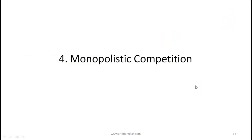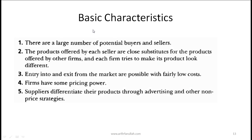Now let's talk about monopolistic competition. The basic characteristics — you need to memorize these five points. There are a large number of potential buyers and sellers. The products offered by each seller are close substitutes, and each firm tries to make its product look different. Entry and exit from the market are possible with fairly low costs. Firms have some pricing power, and suppliers differentiate their products through advertising and other non-price strategies. A favorite example is the toothpaste industry.